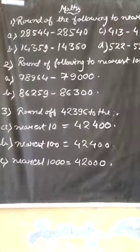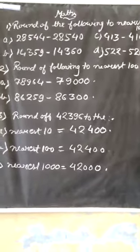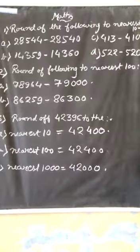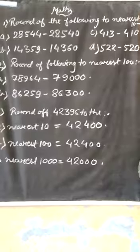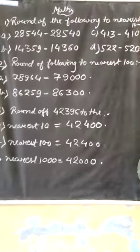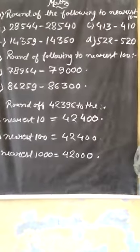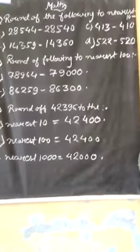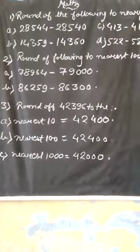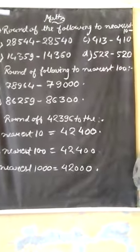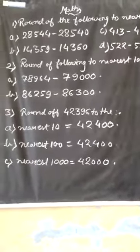If at ones place it is 5 or more than 5, then we convert the tens place to one more, and our ones place will be 0. If it is less than 5, then at ones place we write 0, and no changing at the tens place.